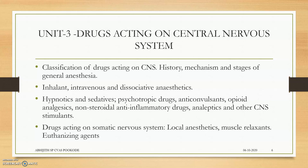Drugs acting on the somatic nervous system — the muscle nervous system — include local anesthetics, muscle relaxants, and euthanizing agents.